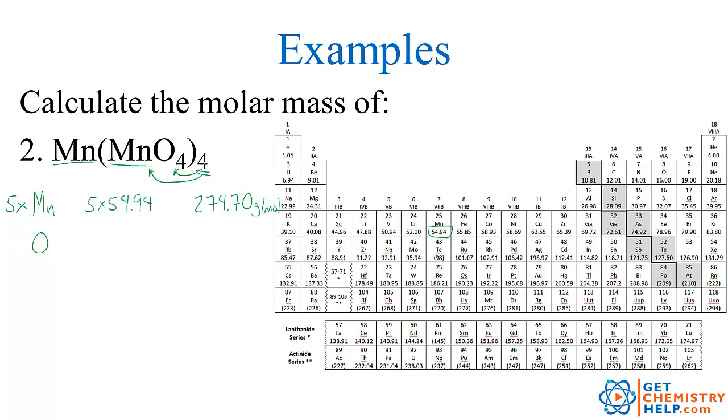How many oxygens do we have? Well 4 times 4 so 16 oxygens. So what's the mass of oxygen? Oxygen is right here 16.00 so 16 times 16.00 so multiply that out in your calculator and I get 256.00 grams per mole so we'll add those together and the total mass is 530.70 so that's the molar mass of manganese 4 permanganate.